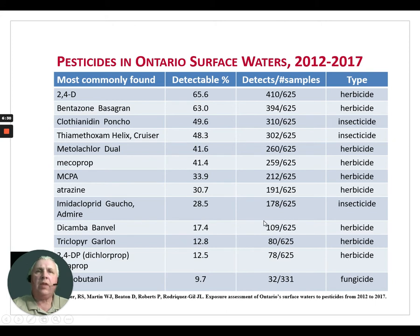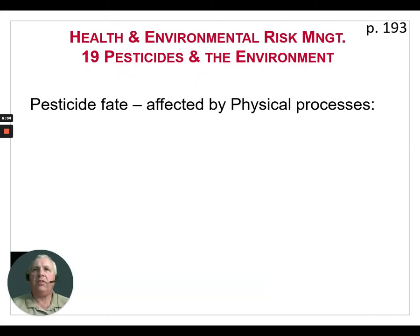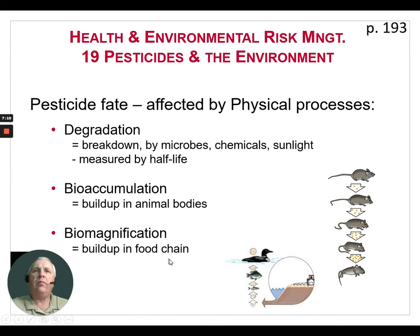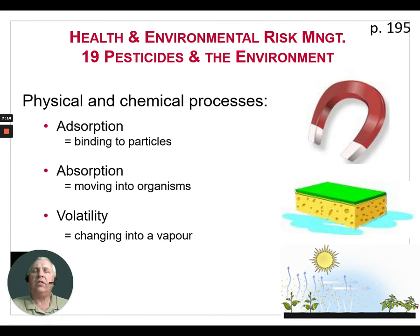Let's talk about what happens when we spray a pesticide — how does it break down? Pesticide fate is affected by physical processes. Degradation is the breakdown of a pesticide by microbes, and pesticides also break down by chemicals and sunlight; it's measured by half-life. Bioaccumulation is the buildup of a pesticide in animal bodies. Biomagnification is when pesticides are absorbed by smaller life forms and work up through the food chain. Pesticides can also be absorbed by binding to clay particles; adsorption is when pesticides move into organisms; and volatility is when a pesticide changes into a vapor and is released into the atmosphere.